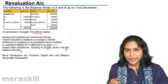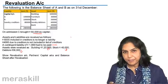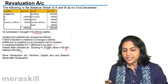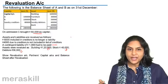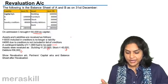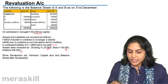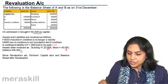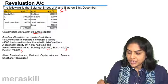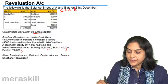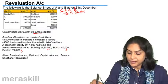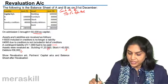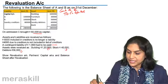I'll quickly go through the journal entries. I'll prepare the journal entries and we will look at the effect in the accounts thereafter. C has brought in capital, so cash account debit to C's capital. Amount is 60,000.